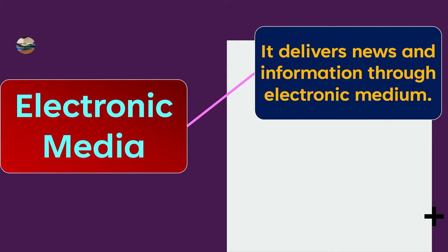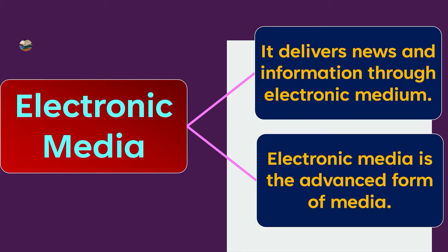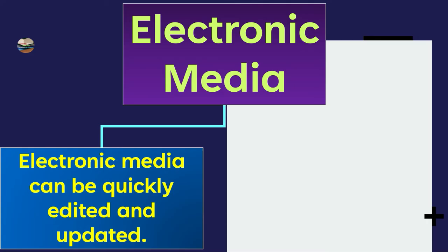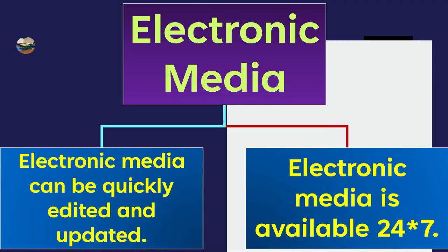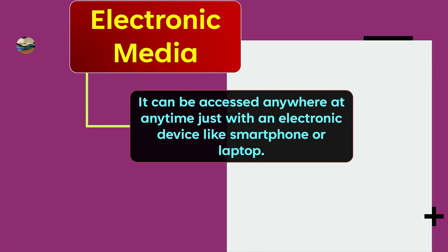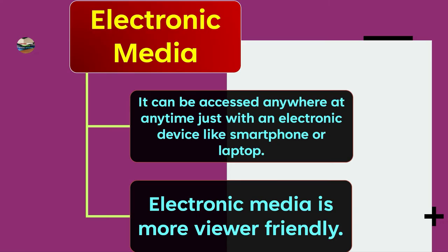Electronic media delivers news and information through electronic mediums. It is the advanced form of media. Electronic media can be quickly edited and updated. It is available 24 hours, 7 days — that is, all the time. It can be accessed anywhere, at any time, with an electronic device like a smartphone or laptop.